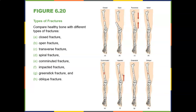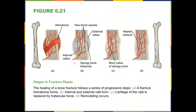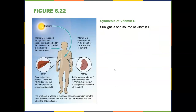Bone fracture healing follows a series of steps: first a fracture hematoma forms; then internal and external callus form — visible on X-ray as the callus develops; next the cartilage of the callus is replaced by trabecular bone; finally remodeling occurs. The whole process can take 6 to 12 weeks. For comminuted fractures, screws and plates help guide callus formation and often remain even after healing.